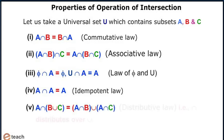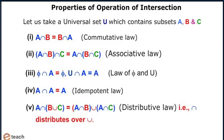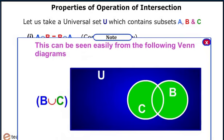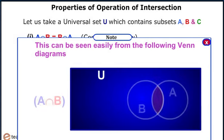Distributive law, i.e., intersection distribution over union, states that A intersection (B union C) equals (A intersection B) union (A intersection C). Note that this can be easily seen from the following Venn diagrams.